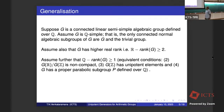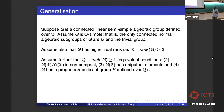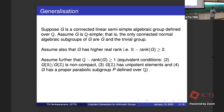I also assume that the ℚ-rank is greater than or equal to one — I need unipotent elements. This assumption is equivalent to any one of the following conditions: that the quotient G(ℝ)/G(ℤ) is non-compact under the quotient topology; that the arithmetic lattice G(ℤ) has unipotent elements; and finally, that the group G has a proper parabolic subgroup P defined over ℚ. These are all equivalent.